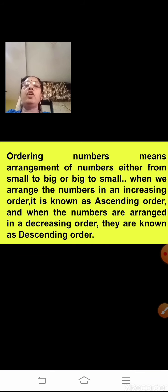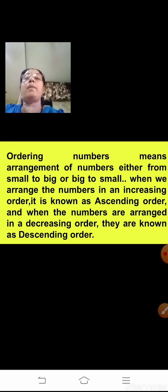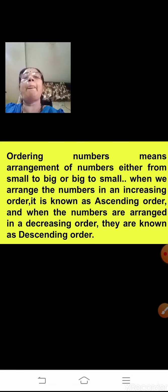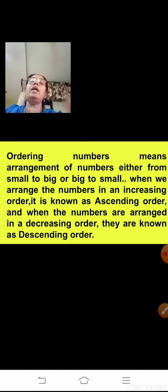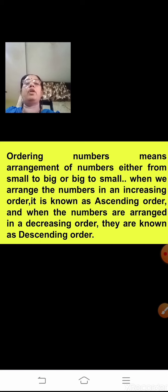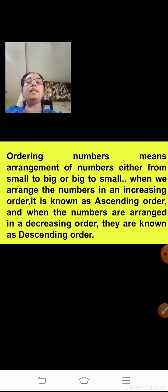Ordering of numbers means writing numbers in ascending and descending order. Once you know how to compare numbers, it is easy to order them. In ascending order, we write from the smallest number to the biggest. In descending order, we write from the biggest to the smallest. Ascending order is an increasing arrangement and descending order is a decreasing arrangement.